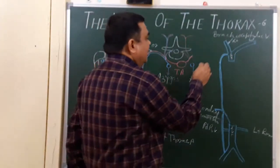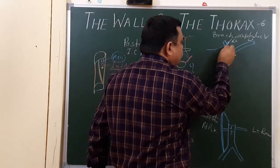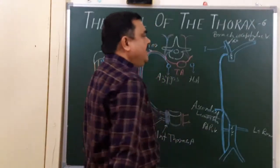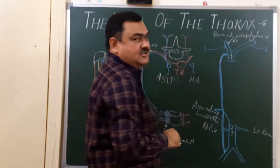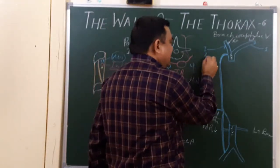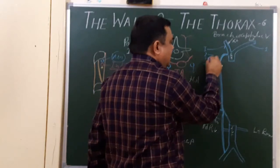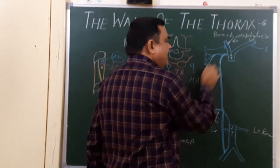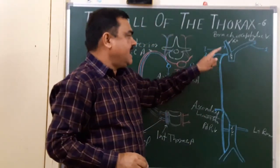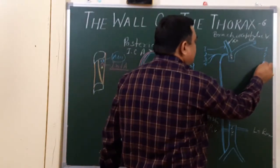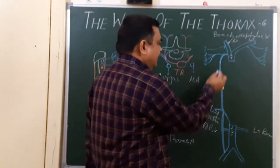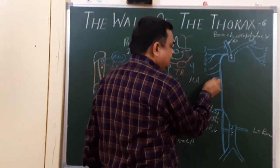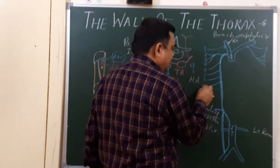The first space: the first posterior intercostal vein drains — on the right side it drains into the right brachiocephalic vein, and on the left side it drains into the left brachiocephalic vein. On the right side, the 2nd, 3rd, and 4th join with each other and form the superior intercostal vein, which drains into the azygous vein. On the left side, the 2nd, 3rd, and 4th join to form the superior intercostal vein and drain into the left brachiocephalic vein.